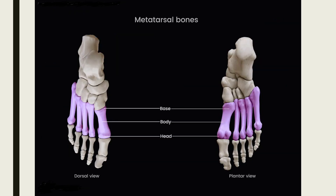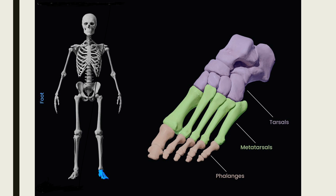The five metatarsal bones lie distal in the foot and connect the tarsals and the phalanges. These miniature long bones have a proximal base and a distal head, and from medial to lateral side they are named the first to fifth metatarsal bones. The phalanges consist of 14 bones: two in the hallux and three in each of the other toes. From proximal to distal are the proximal, middle, and distal phalanges. There are three joints: the metatarsophalangeal joint, the proximal interphalangeal joint, and the distal interphalangeal joint.